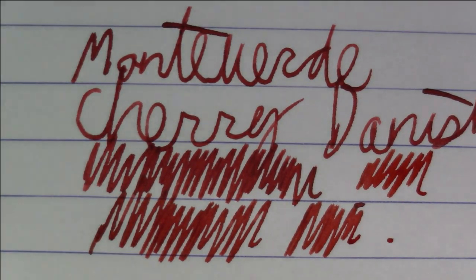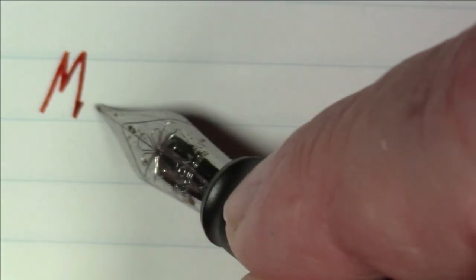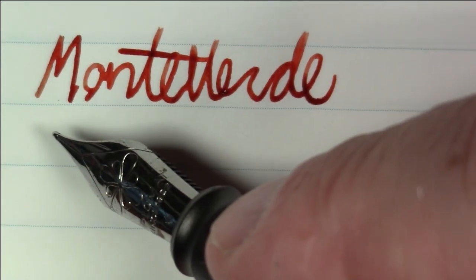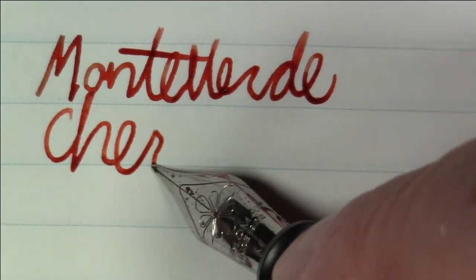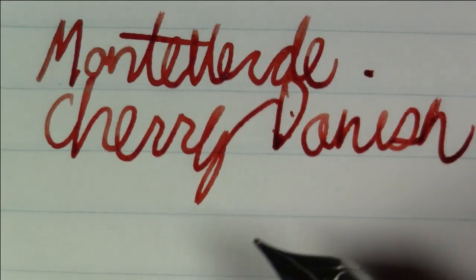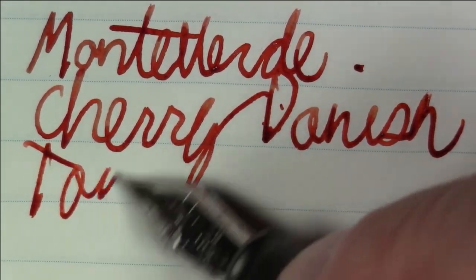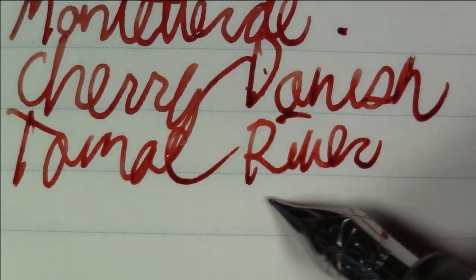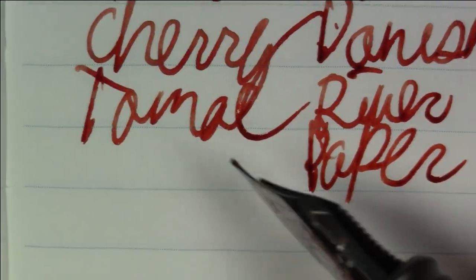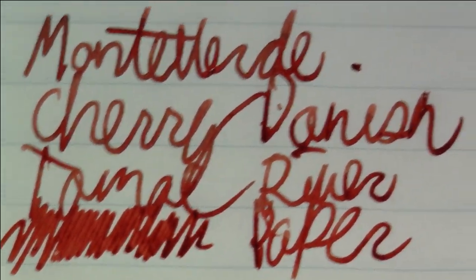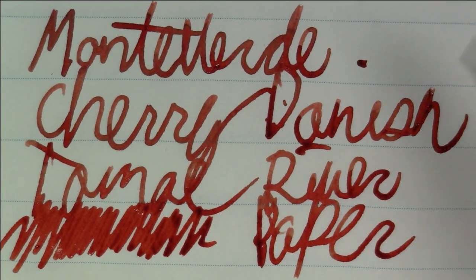That's what this ink looks like on this Rhodia paper. Let's take a quick look at what it looks like back on Tomoe River paper. Okay folks, so again what we have here is Monteverde Cherry Danish and this is on Tomoe River paper.